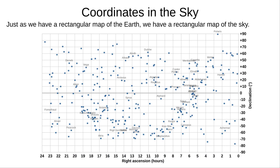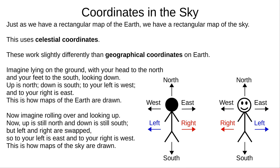Now, at last, it's time to look up. This is a map of the 300 brightest stars, and just like the Earth map, it's a rectangle. Just like the Earth map, it distorts the shape of the sky, but it's very useful to astronomers. We're now using celestial coordinates instead of geographical coordinates — they're similar, but with a few important differences.